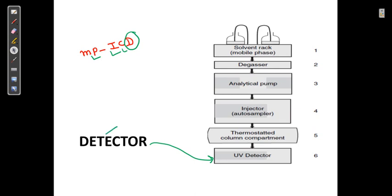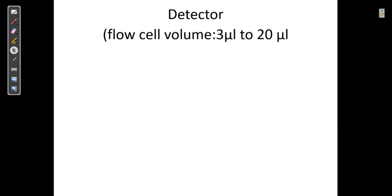The flow cell volume is an important terminology we have to remember: 3 to 20 microliters. It is very low — this is talking about microliters. Flow cell is very important for us.